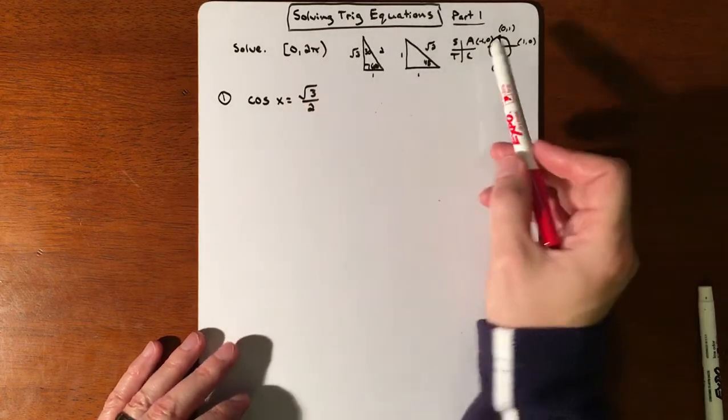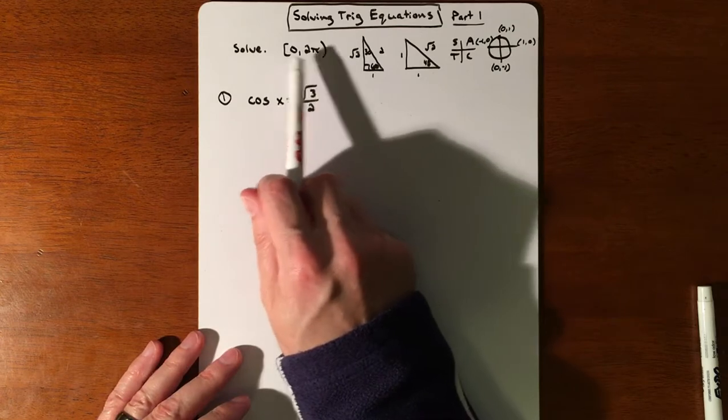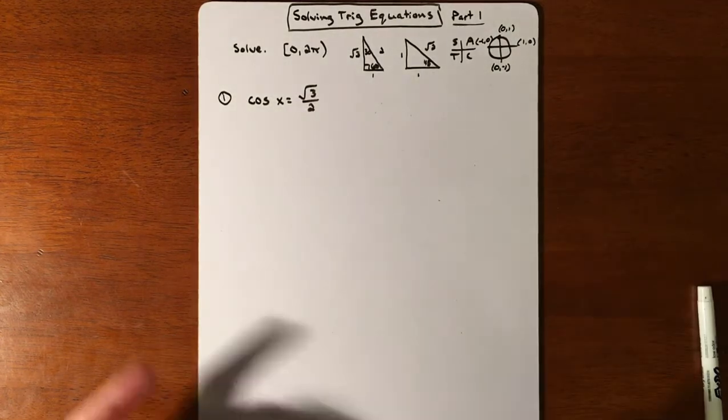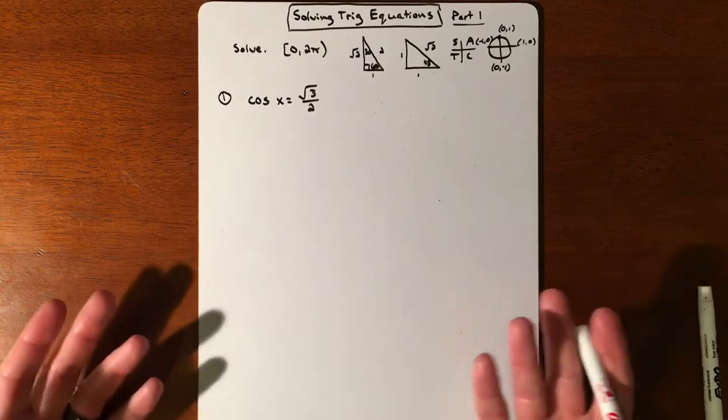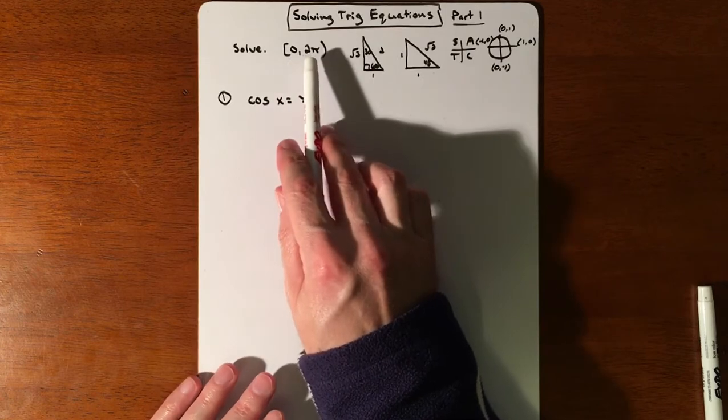There's quadrants associated with this, so they a lot of times limit you. And in future videos, we'll talk about what if they don't limit you, how do you represent all the infinite answers. But most of the time you get limited, so our answers are only going to come from 0 and 2 pi.